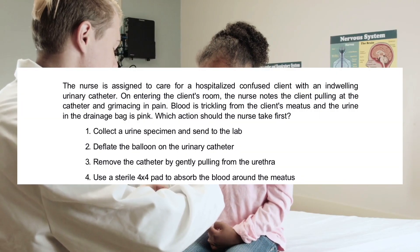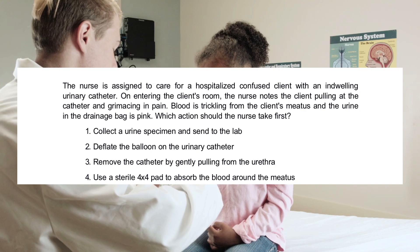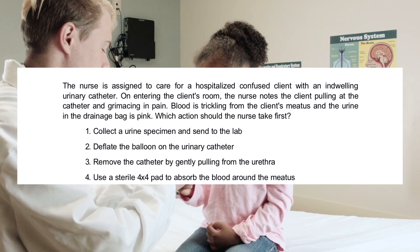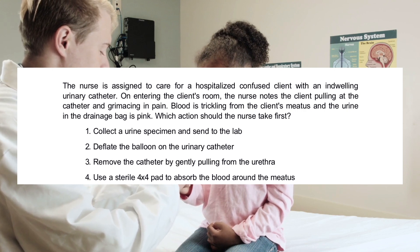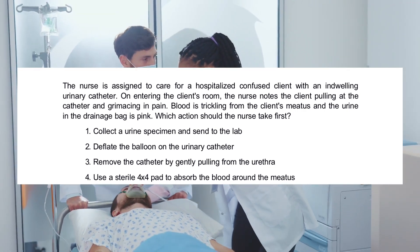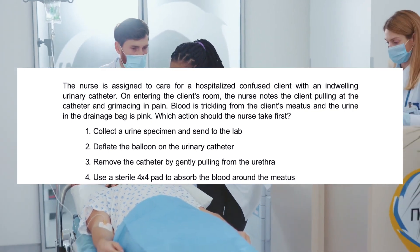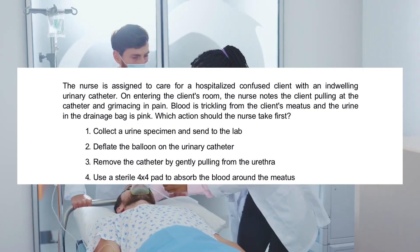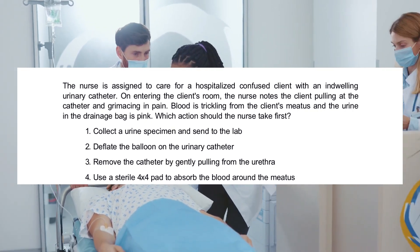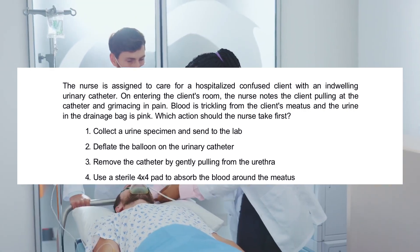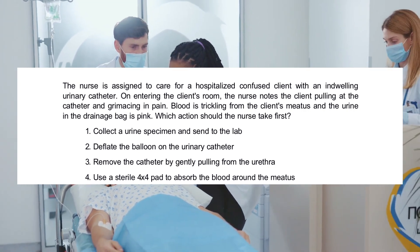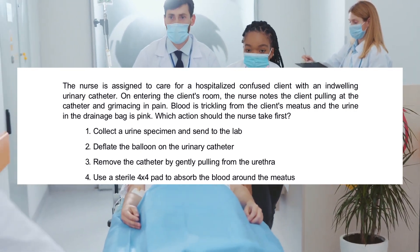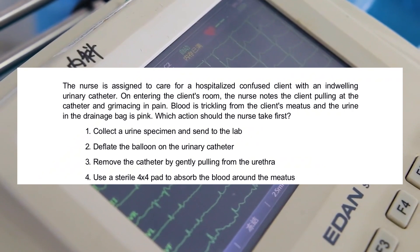The nurse is assigned to care for a hospitalized confused client with an indwelling urinary catheter. On entering the client's room, the nurse notes the client pulling at the catheter and grimacing in pain. Blood is trickling from the client's meatus and the urine in the drainage bag is pink. Which action should the nurse take first? 1. Collect a urine specimen and send to the lab. 2. Deflate the balloon on the urinary catheter. 3. Remove the catheter by gently pulling from the urethra. 4. Use a sterile 4x4 pad to absorb the blood around the meatus.